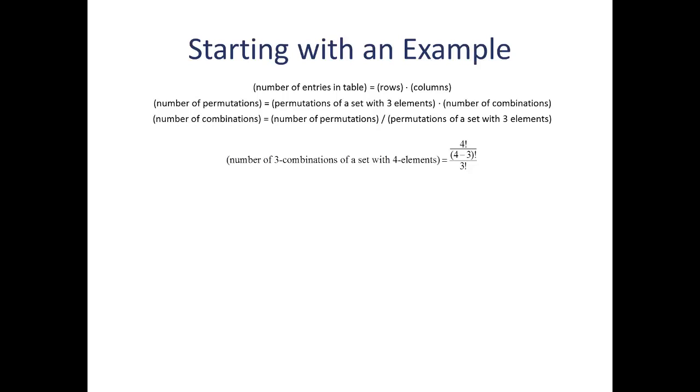Now, I'm going to need a little more room. So, I just copied those calculations from the end of the last screen up to here. And now, I'm going to replace the expressions on the right-hand side. The number of permutations and the permutations of a set with three elements with the formulas that we derived previously. The number of permutations is four factorial divided by four minus three factorial. That's the number of permutations of a set with four elements where we're taking them three at a time. And the number of permutations of a set with three elements is just three factorial.